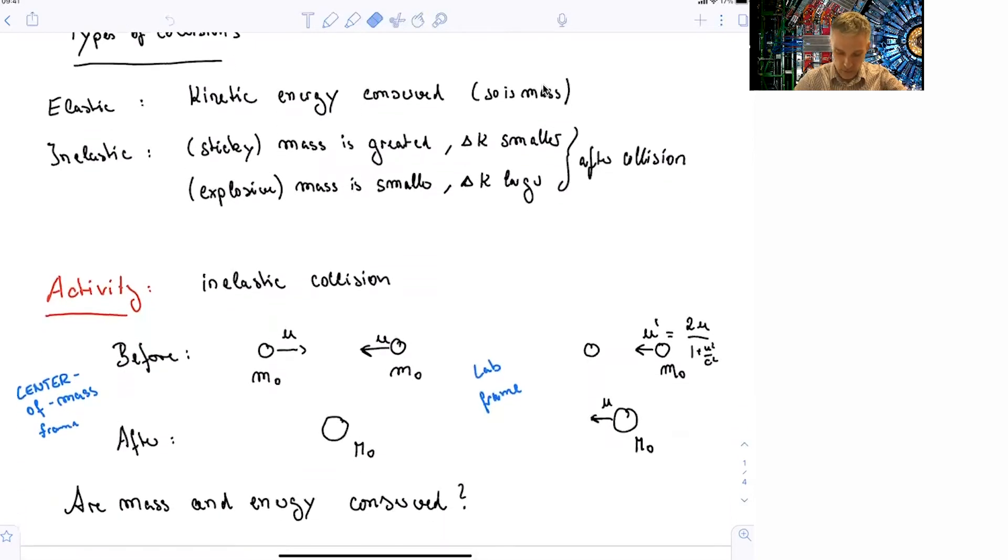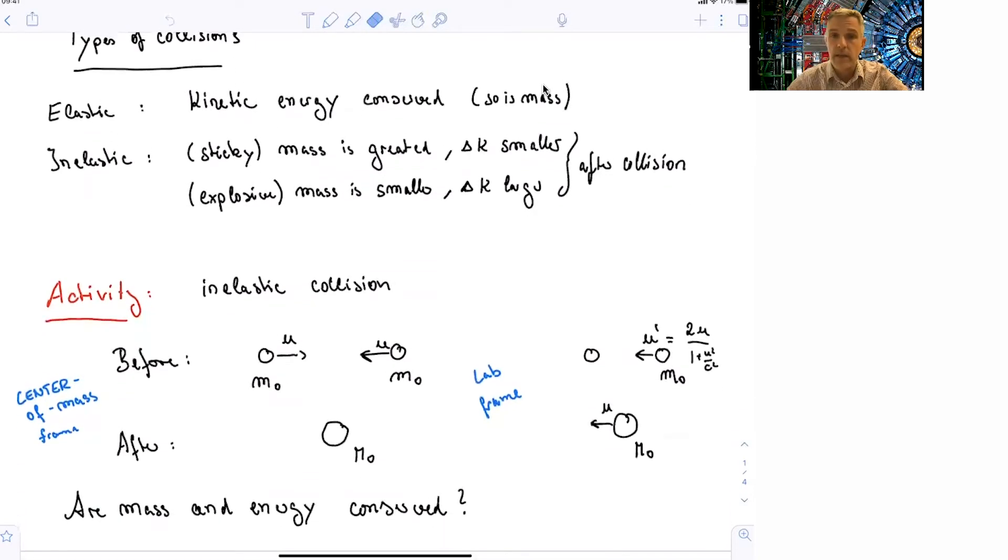So here we want to do an activity and study an inelastic collision. So before, we have two particles there, or billiard balls. They're exactly the same, and they have a velocity u. And after the collision, the mass is capital M, big mass.